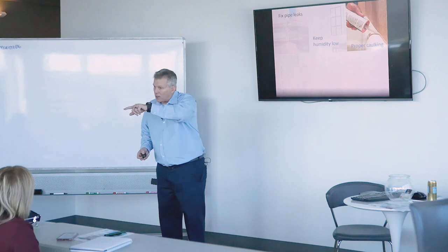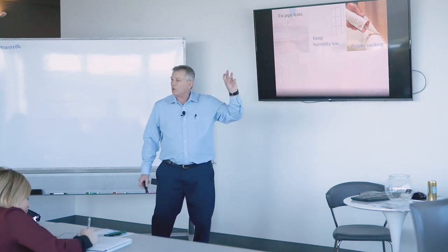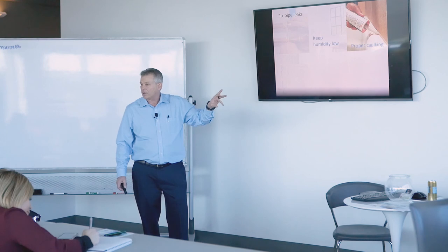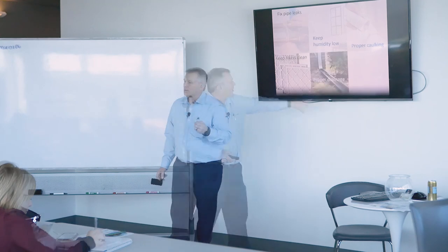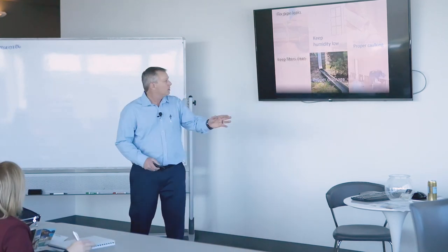Prevention tips. Obviously, fix any pipe leaks quickly. Keep humidity low. Use proper caulking. Always caulk around your sink or your bathtub. Get caulks that don't have those natural ingredients. Keep filters clean. We recommend using HEPA filters. Proper drainage. Keep moisture away from the house. Professionally handling any flooding. Thanks, guys. Thank you so much. Any questions or anything like that? Awesome. Thanks a lot. Grab yourself a muffin.